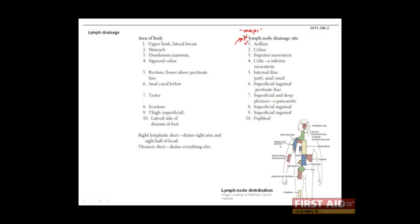For example, the axillary nodes, which on the drawing are shown here, drain the upper limb and lateral breast.